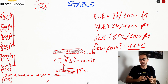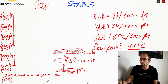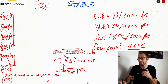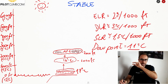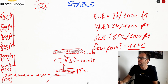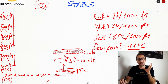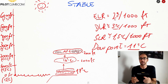This is a stable environment. You won't have any significant vertical movement, so you're going to have low-level clouds — very thin clouds — and that's it. The environmental lapse rate of 2°C per 1,000 feet is a standard number, but in real life the lapse rate changes constantly — it can be 1 degree, 3 degrees, or 5 degrees depending on the day.